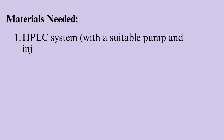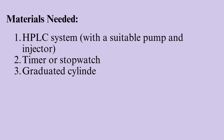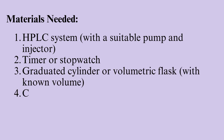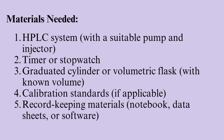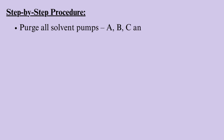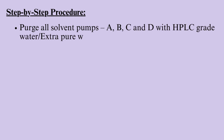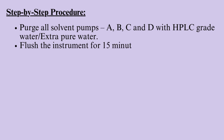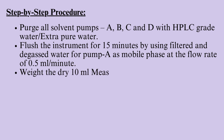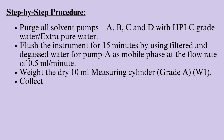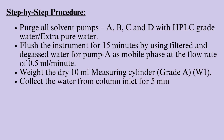Flow rate accuracy — materials needed: HPLC system with a suitable pump and injector, timer or stopwatch, graduated cylinder or volumetric flask with known volume, calibration standards if applicable, and record keeping materials such as notebook, data sheets, or software. Step-by-step procedure: Purge all solvent pumps B, C, and D with HPLC grade water. Flush the instrument for 15 minutes using filtered and degassed water for pump A as mobile phase at a flow rate of 0.5 milliliters per minute. Weigh the dry 10 milliliters measuring cylinder, grade A (W1). Collect the water from the column inlet for 5 minutes.